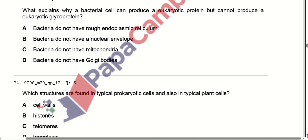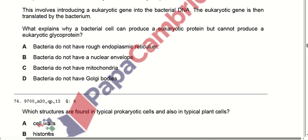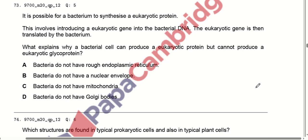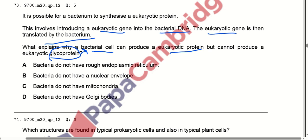It is possible to use bacteria to synthesize a eukaryotic protein. This involves introducing a eukaryotic gene into bacterial DNA, which is then translated by the bacteria. What explains why a bacterial cell can produce a eukaryotic protein but cannot produce a glycoprotein? Glycoprotein is a modification of protein performed by Golgi bodies. Since bacteria do not have Golgi bodies, they cannot produce glycoproteins. Option D is correct.